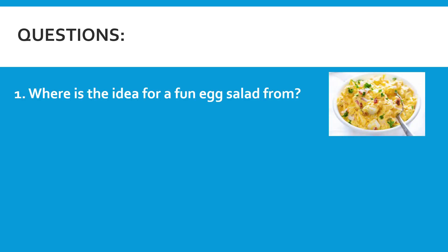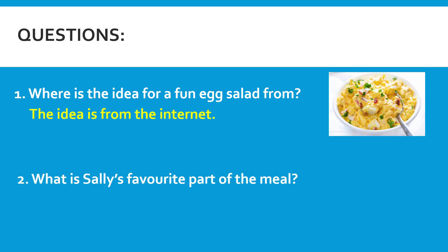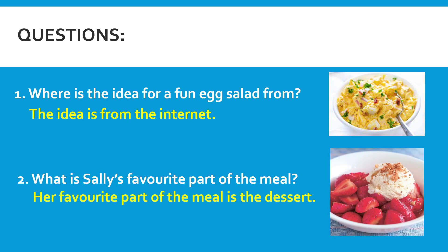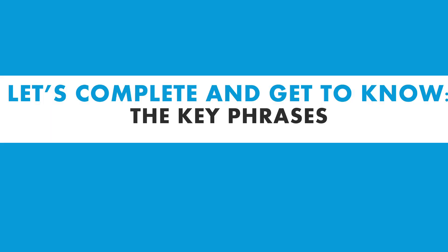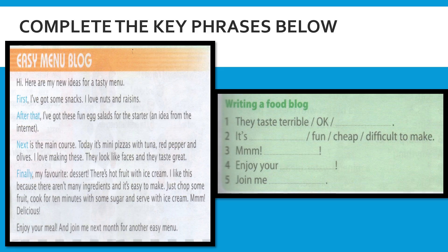Questions. Where is the idea for a fun egg salad from, based on Sally's blog? The idea is from the internet. Number two, what is Sally's favorite part of the meal? As mentioned in the blog, Sally's favorite part of the meal was the dessert — hot fruit with ice cream. Now let's move on to the second activity, which is to complete and get to know the key phrases. These are the key phrases that we detected from Sally's blog, and now you're going to complete the gaps.